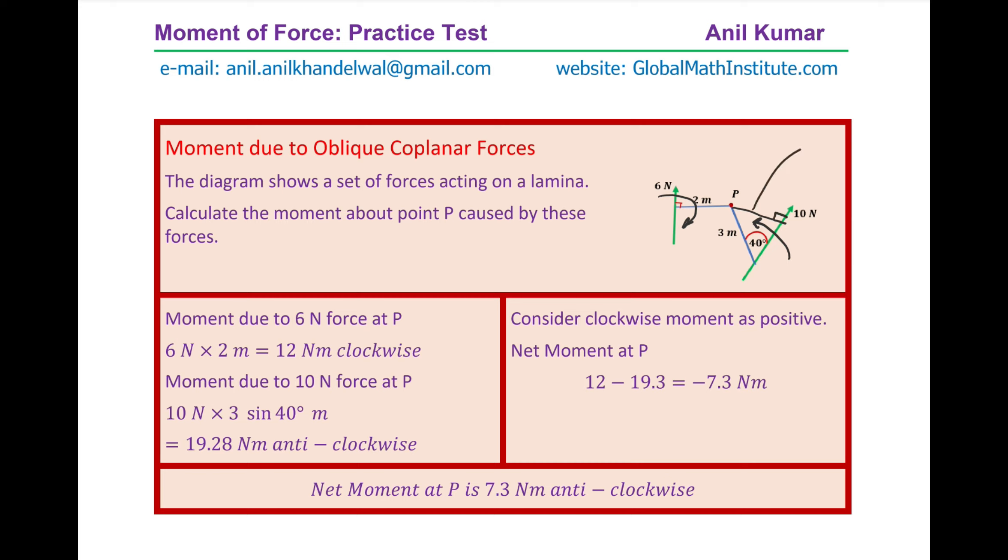The other one, the opposite side being 3 sine of 40 degrees will be multiplied by 10 Newton to give the counterclockwise moment at P. So the first one is 12 Newton meter as we calculated. The second one is 19.28. Keeping clockwise as positive, adding them together, we get minus 7.3 Newton meter. Therefore, the net moment at P due to these forces is 7.3 Newton meter anti-clockwise.